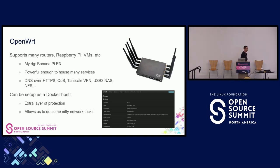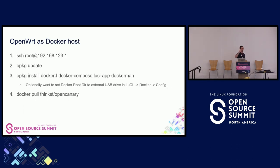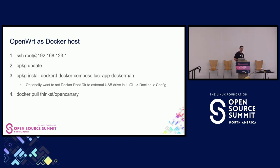You can actually run Docker on this thing — Docker containers on your router, which is crazy but awesome. To set it up as a Docker host, you want to connect to it through SSH. You run four commands: SSH in, update your package list, install Docker, Docker Compose, and LuCI app Dockerman, which adds an extension to the web UI to configure Docker images. Then you pull in this Docker image that Thinkst distributes for OpenCanary, and you pretty much have the base honeypot system on your router.